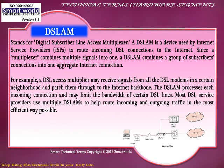For example, a DSL access multiplexer may receive signals from all the DSL modems in a certain neighborhood and pass them through to the internet backbone. It collects data from all local DSL modems and transfers it as a single stream.